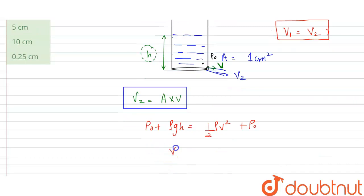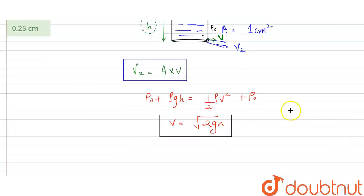From here, the velocity comes out to be √(2gh). This is the value of our velocity. So we can write the volume flow rate V₂ equals A × √(2gh).